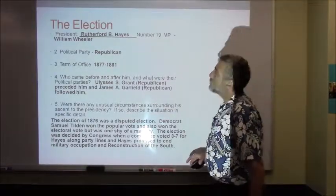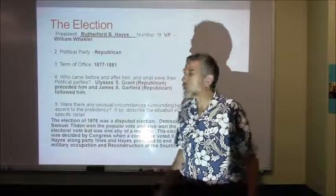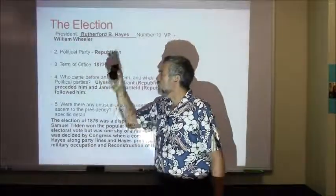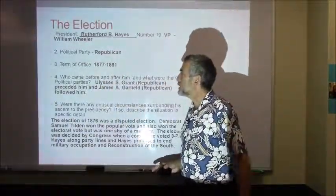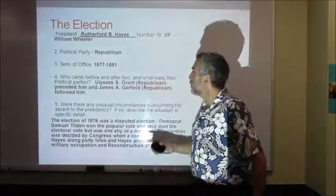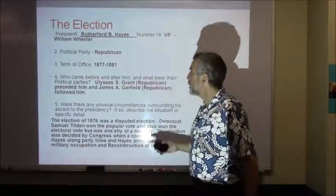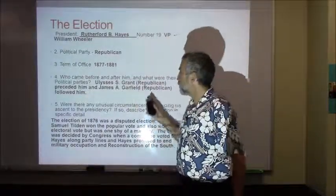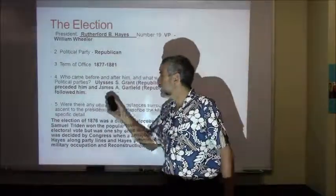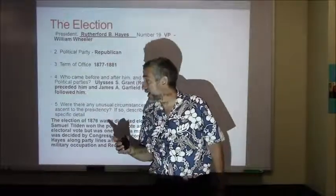He's number 19. His Vice President was William Wheeler — another cool name. He's a Republican, term of office 1877 to 1881. Who came before him and after him? Ulysses S. Grant comes before him — he's a Republican — and James A. Garfield, also a Republican, follows him.